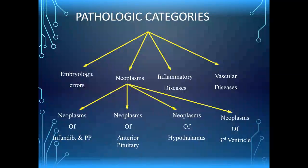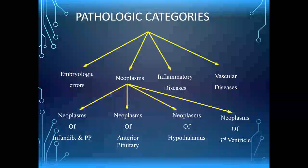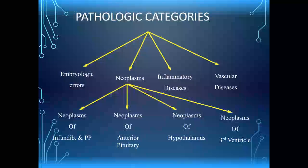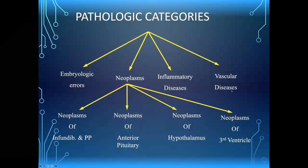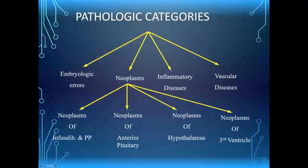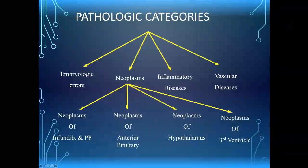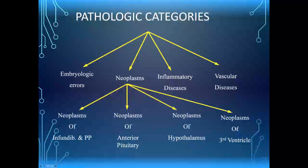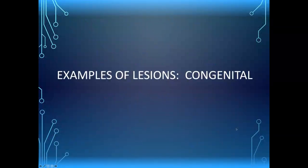Now that you know where and what to look for on MR, I'll subdivide the pathology into: those occurring because of embryological errors, vascular diseases, inflammatory diseases, and our biggest category — neoplasms. Neoplasms are broken down into those of the infundibulum and posterior pituitary, those of the anterior pituitary, and those in the hypothalamus. I've excluded the gamma differential diagnosis lists from this lecture to save time.